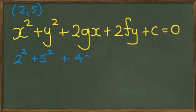10f plus c equals 0. So I'm going to rewrite this so that all the numbers are on the right-hand side.